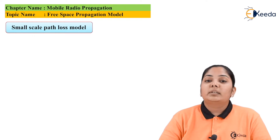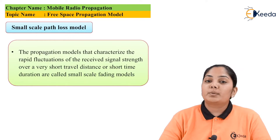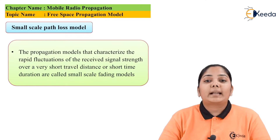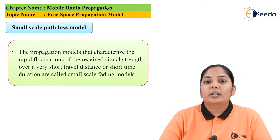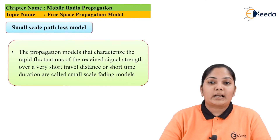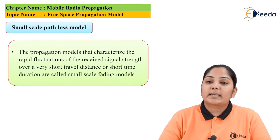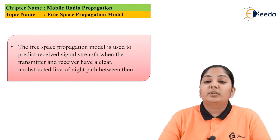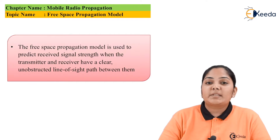Let us now move on to the small scale path loss model. The propagation models that are characterized by a rapid fluctuation in the signal over a shorter time duration or a shorter distance between the transmitter and the receiver are called small scale path loss models.